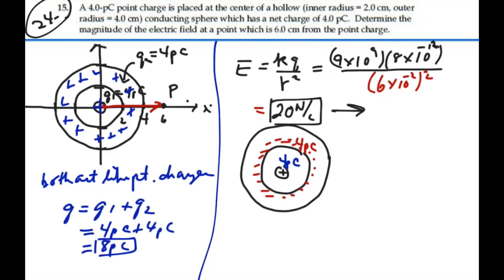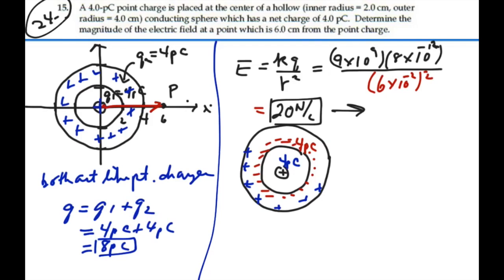And then, because that four picocoulombs was pulled to that inner shell, we would end up with an outer shell that had positive four picocoulombs plus another positive four picocoulombs. So this outer shell would have eight picocoulombs. So, in essence, what's inside here would cancel out and we'd end up with an effect of an eight picocoulombs positive shell.